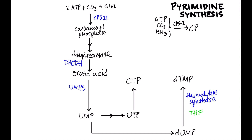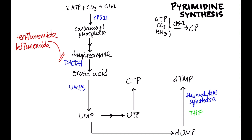Dihydroorotate dehydrogenase (DHODH) can be blocked by a class of drugs: teriflunomide and leflunomide. These drugs are used in the treatment of rheumatoid arthritis and psoriatic arthritis, so they block the DHODH enzyme.